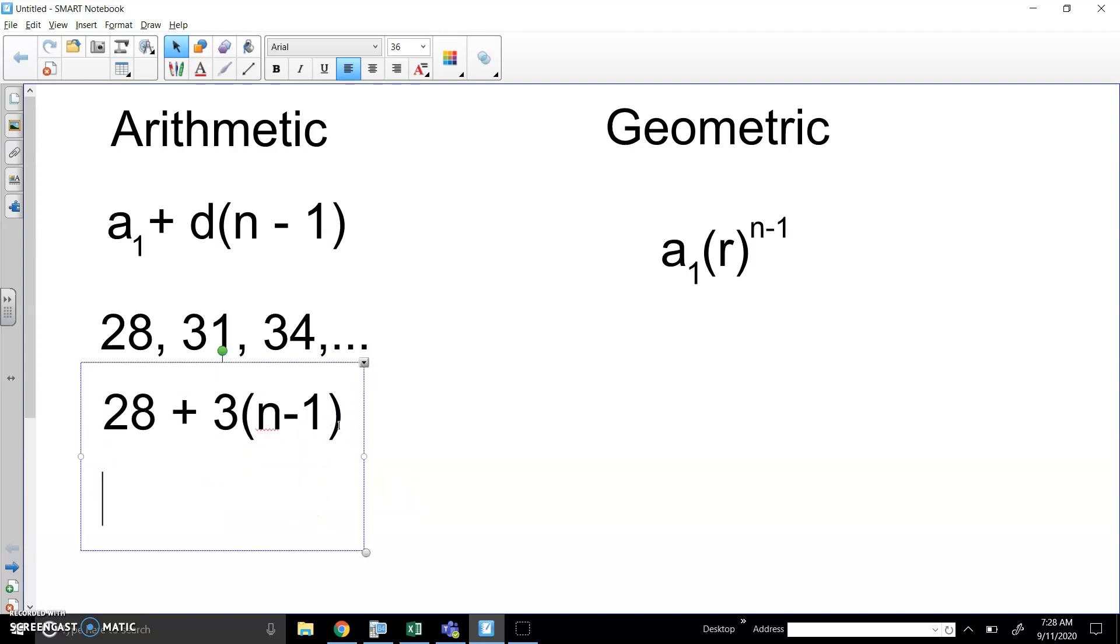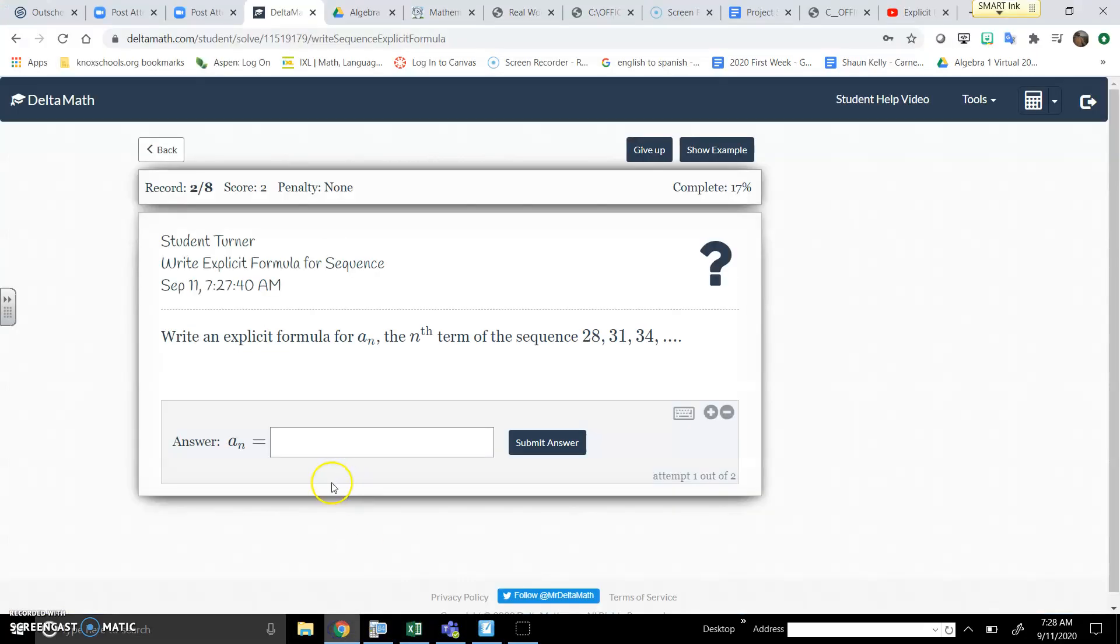We're going to take a moment to simplify that a little bit by distributing. This is multiplication. 3 times N, 3N. And if you multiply 3 times negative 1, you get negative 3. So like the other one, we have some simplification to work on. 3N doesn't simplify, but 28 minus 3 is 25. And now, if you were to replace 1 for the N value, you will calculate 28. If you plug in 2, 3 times 2 is 6, plus 25, 31. And so forth for the rest of the sequence. So 3N plus 25 goes right here. And then that's my answer.